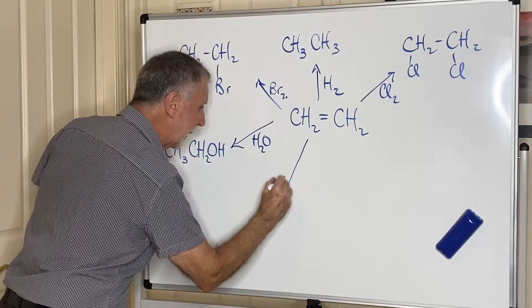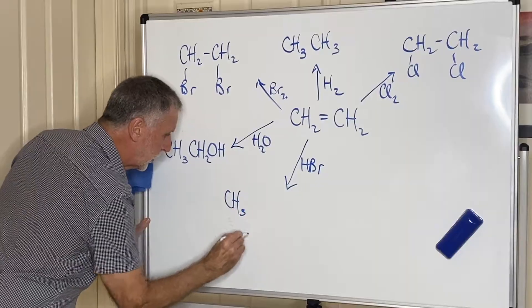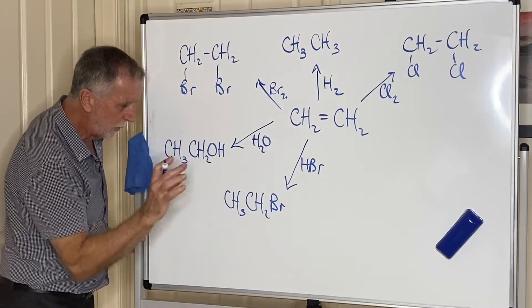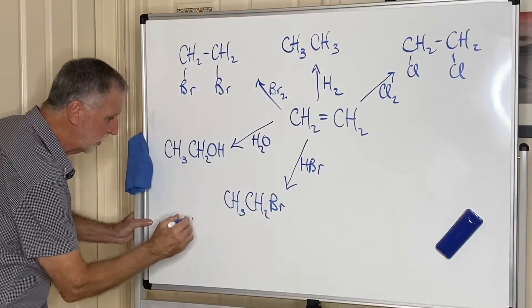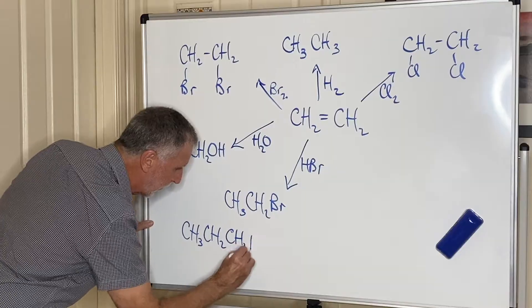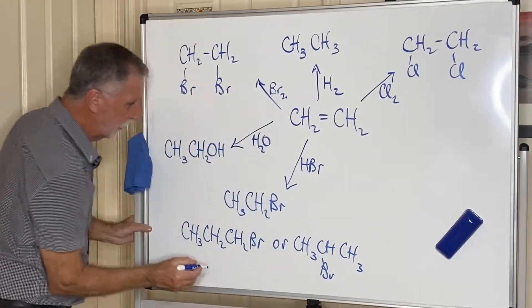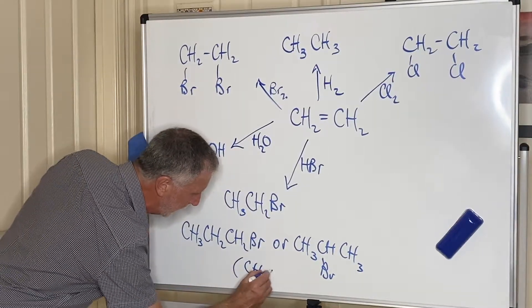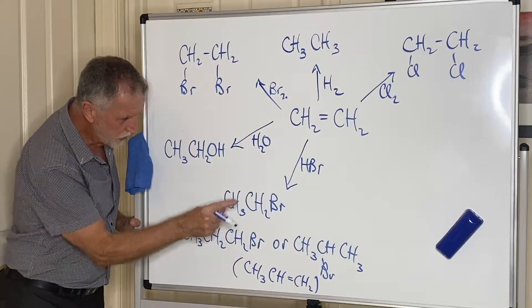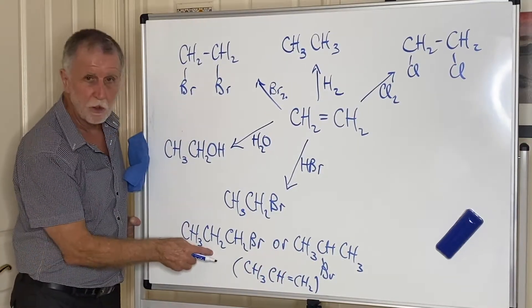Another reaction is if you add a hydrogen halide, like say HBr. HBr, now if you do this, hydrogen goes to one carbon and bromine to the other, and this forms bromoethane. However, if you had an alkene like propene, then you would have two possibilities. You could have CH3-CH2-CH2-Br, or you could have CH3-CHBr-CH3. Hopefully that makes sense, guys. So these have come from propene: CH3-CH=CH2. Now then, you are expected to know which of those is the favorite product.